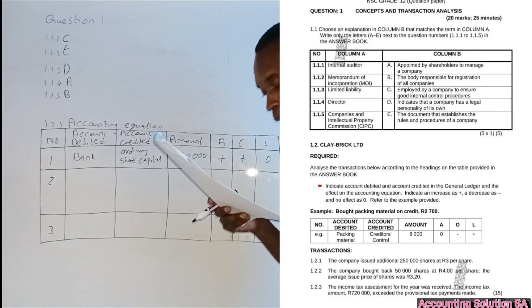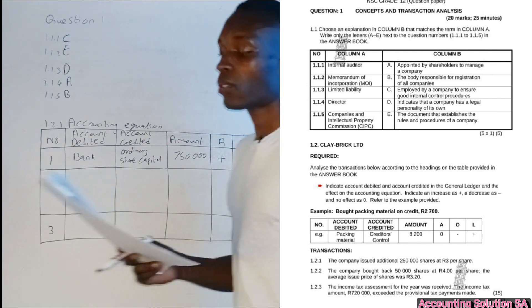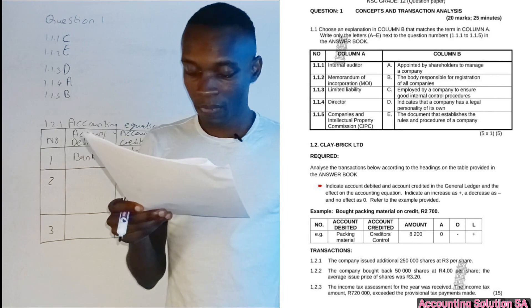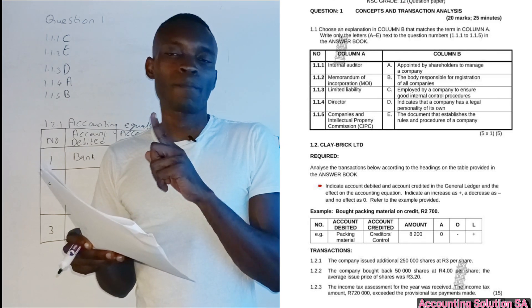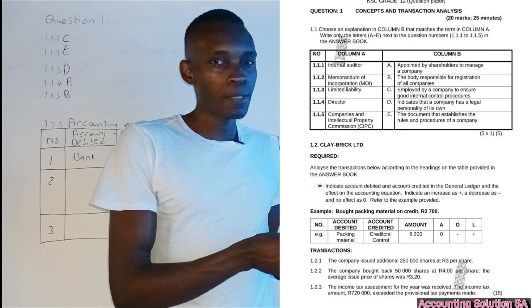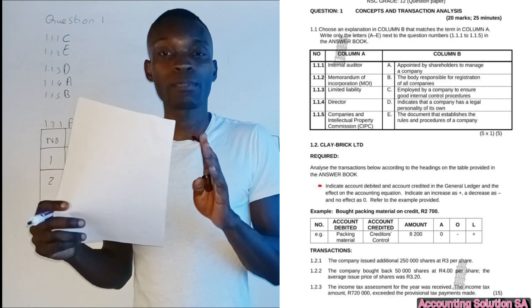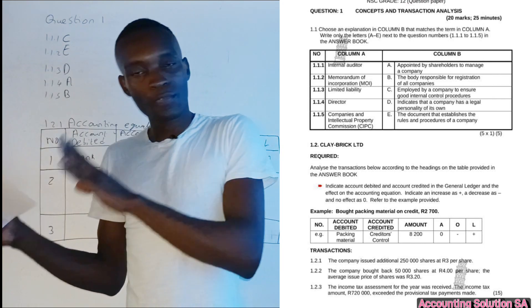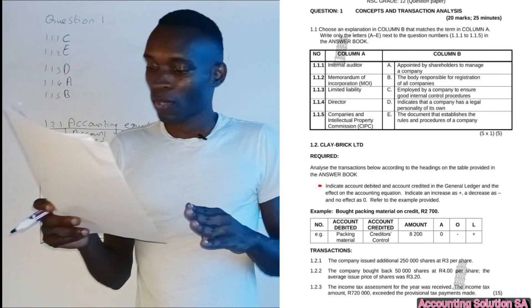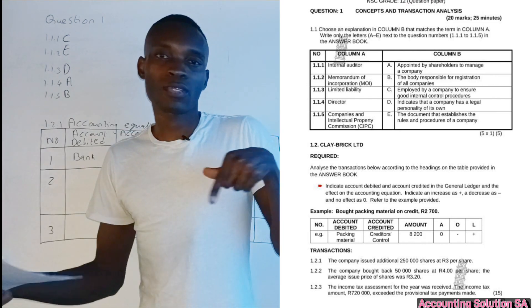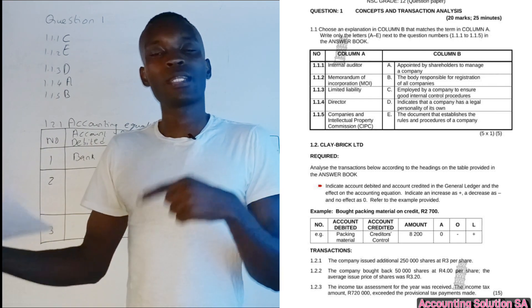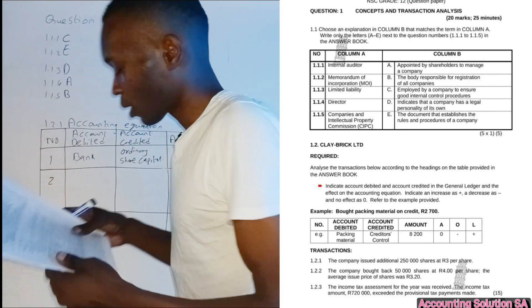Number two, the company bought back 50,000 shares at R4 per share and the average issue price of shares was R3.20. Be careful about this one. If they said the shares were bought back at R4, you don't multiply by R4 under ordinary share capital. Some amount is for ordinary share capital, some amount, the loss, is for retained income. Average price is the one we record under ordinary share capital and the balance between purchase price and average we call it a loss that goes to retained income and reduces profit.